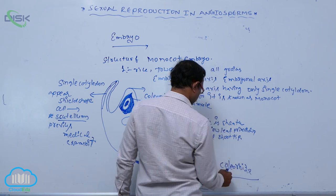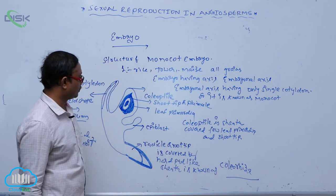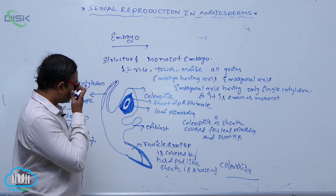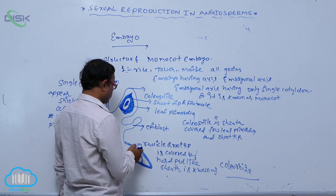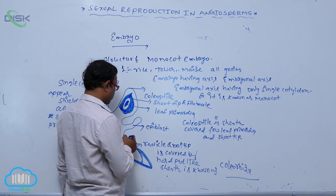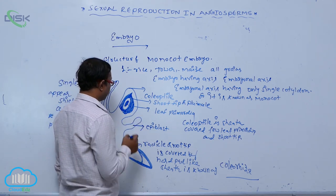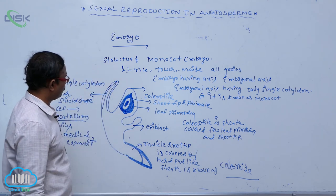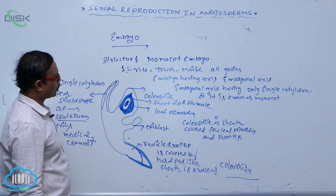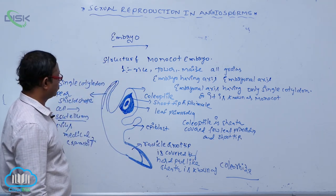After that, the structure includes the hypocotyl and epicotyl. This completes the structure of the monocotyledonous embryo.